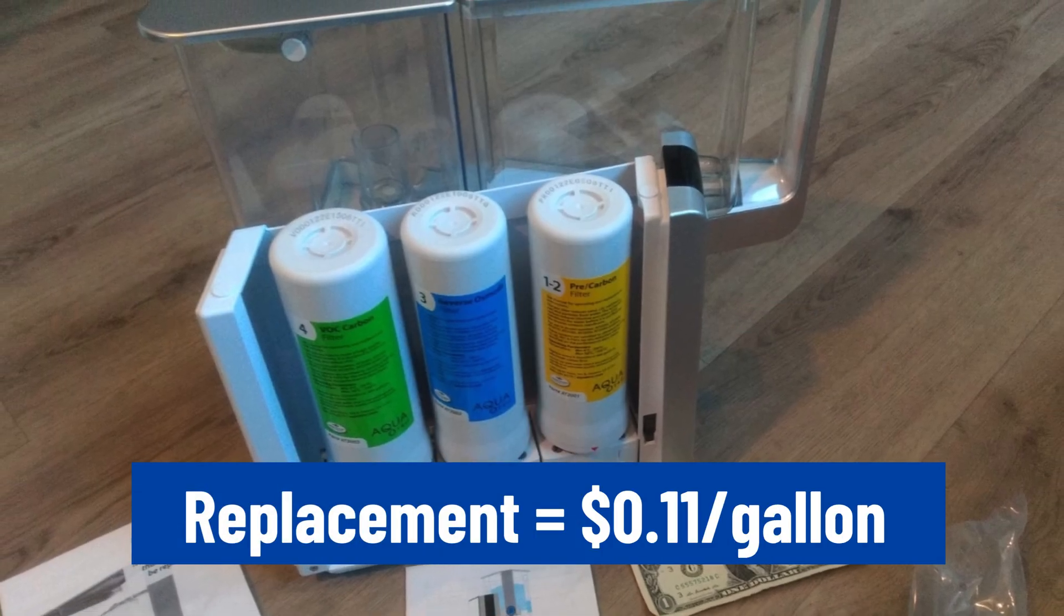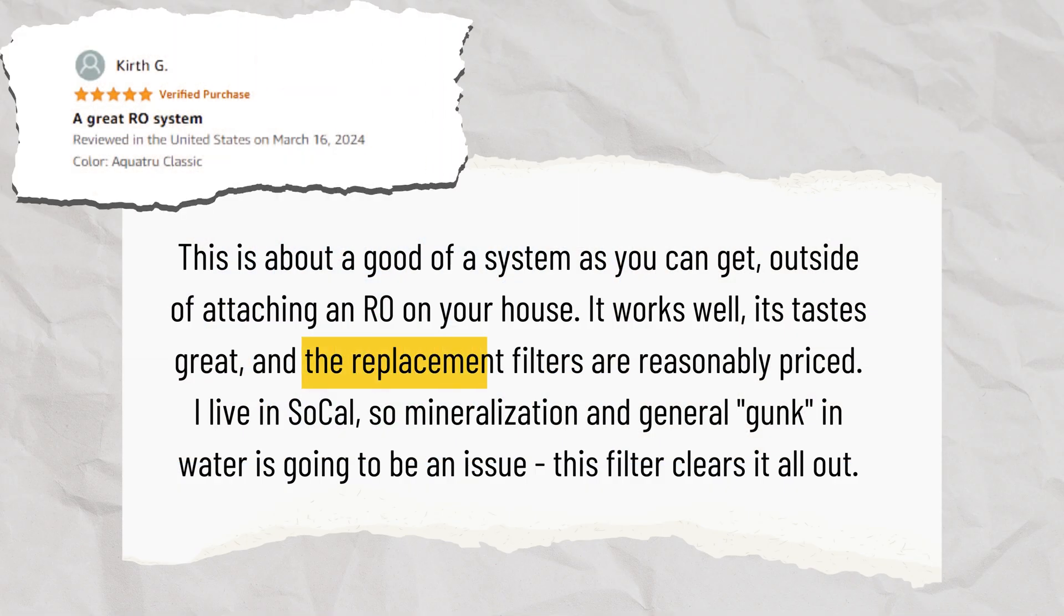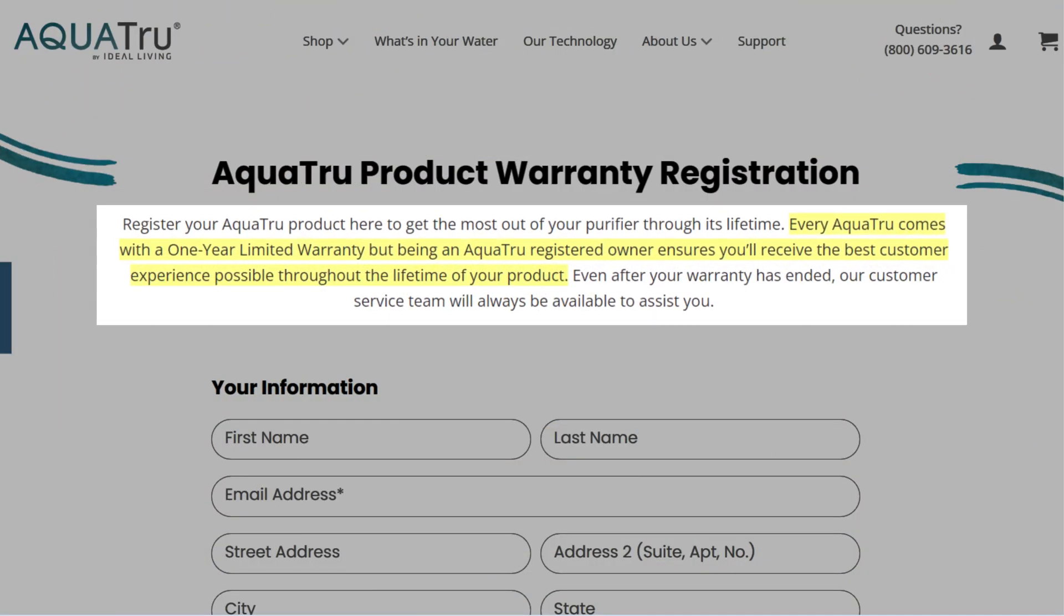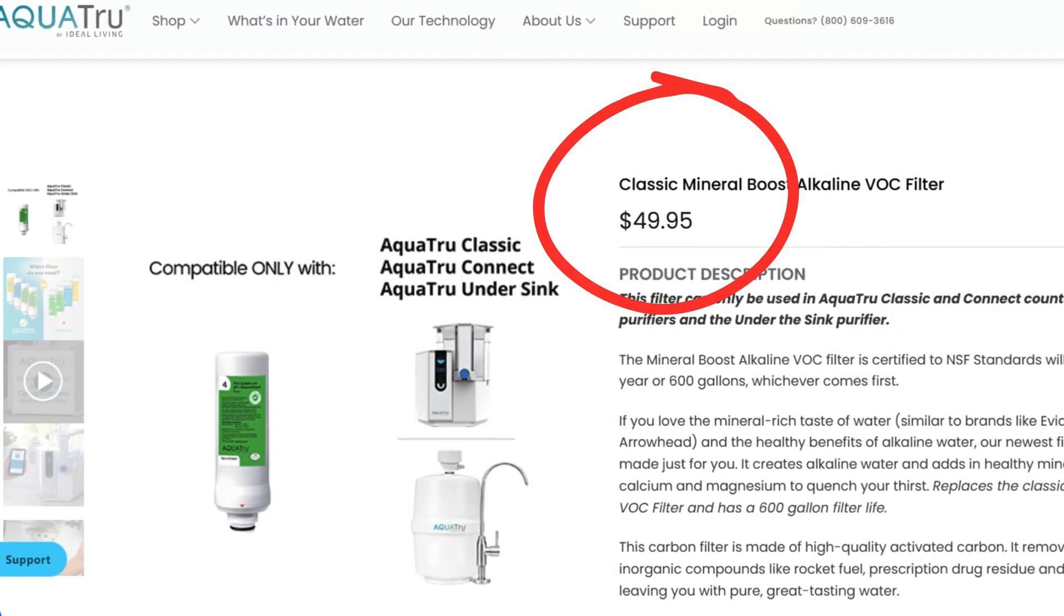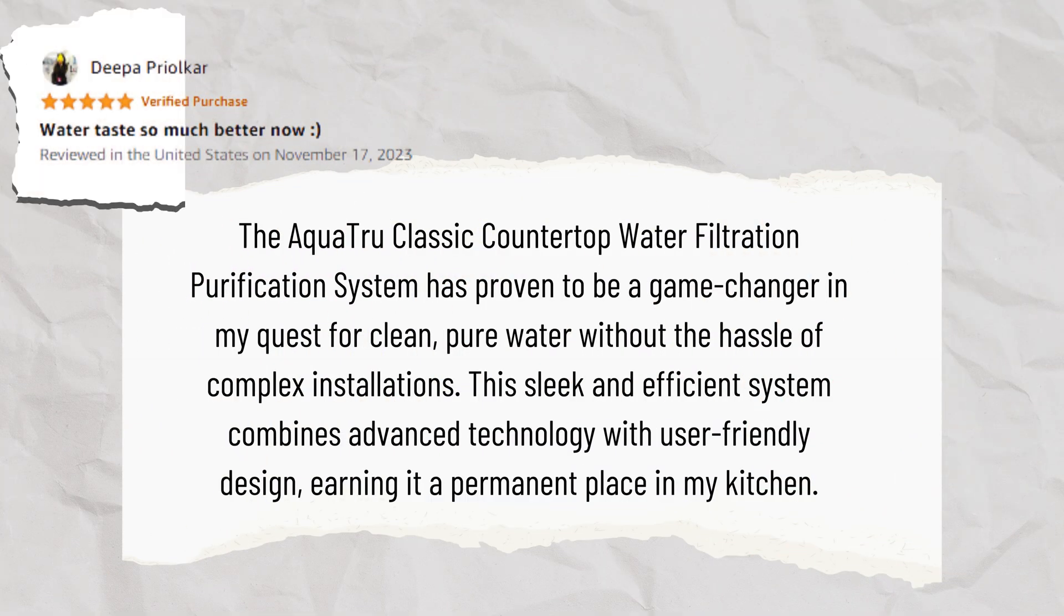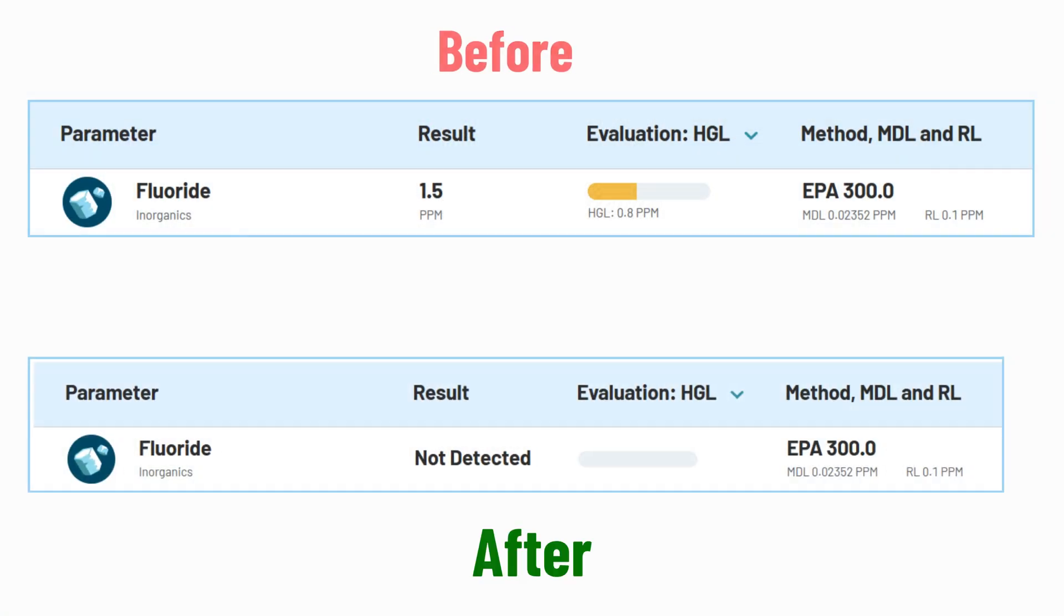The overall replacement cost is $0.11 per gallon, which is cheaper than average. The Aquatru comes with a limited warranty for one year for added peace of mind. Coming to its cons, the system's remineralization filter costs extra, and the water dispensing is slow. But overall, the Aquatru is ideal for individuals seeking a compact, installation-free, highly efficient reverse osmosis system for fluoride elimination.